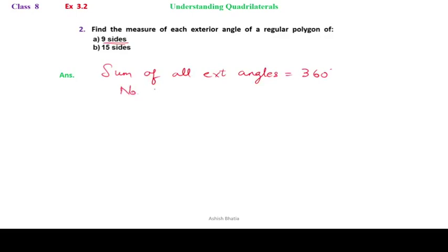Let's see the number of sides given in part (a) - that is nine sides. To find the measure of each angle, the formula states that the exterior angle equals the sum of all angles, which is 360 degrees, divided by n, the number of sides.